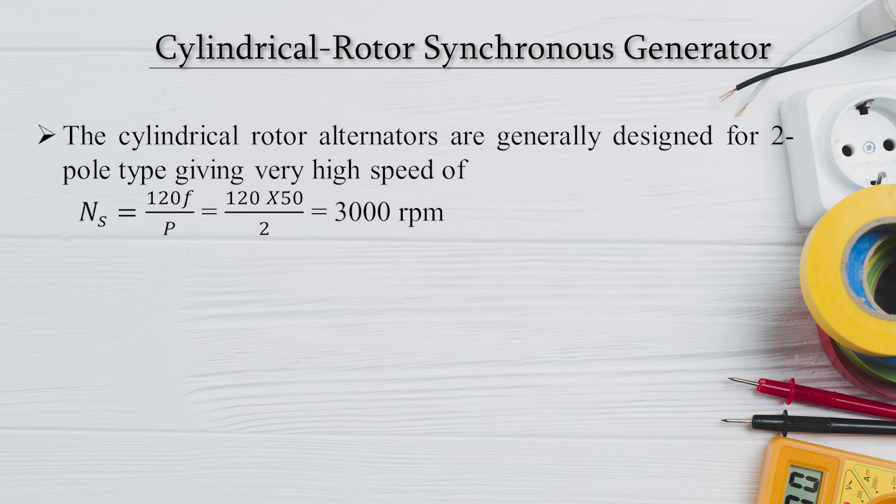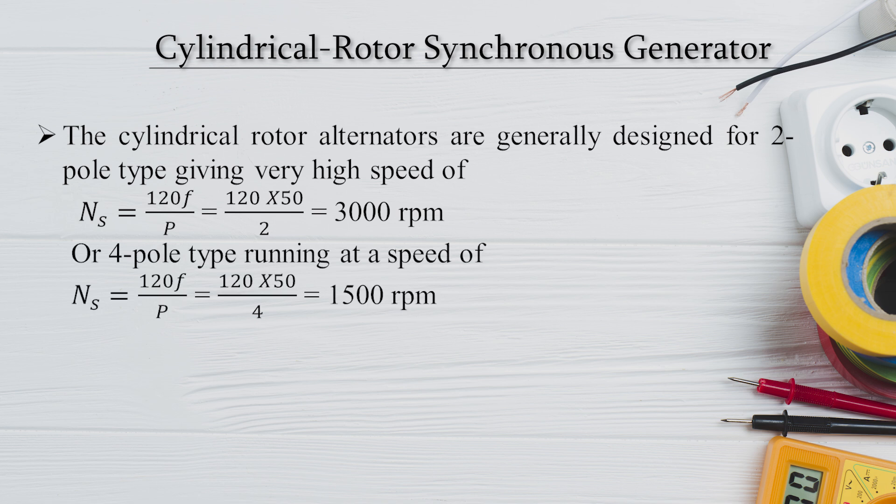If you increase the number of poles to 4, NS = 120F/P gives a speed of 1500 RPM, which is still quite high. So cylindrical rotor type of synchronous generator is more suitable for such high speeds.